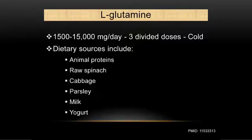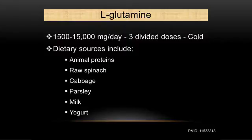Treatment comes in the form of glutathione, N-acetylcysteine, and L-glutamine. L-glutamine is used at 1,500 to 15,000 milligrams per day. It has to be kept cold because if you heat it up you denature it and it's no longer effective. Dietary sources include animal proteins, raw spinach, cabbage, parsley, milk, and yogurt.